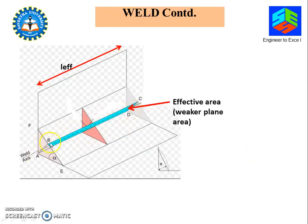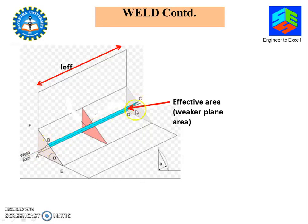This cyan color represents the effective length of the weld. AB is the throat thickness. This is the area — this is the plane which will fail first. This is the weakest plane.